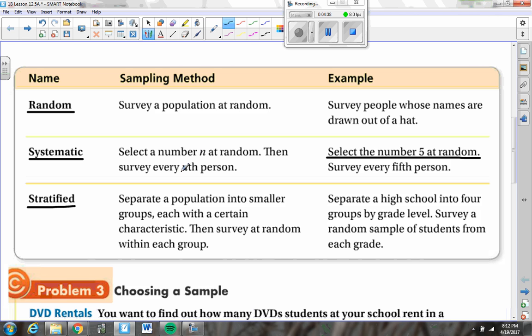The third type of sampling method is called stratified samples and a stratified sample separates the population of people into different categories, each of which have a certain characteristic. So like the example here, separate a high school into four groups by grade level. Maybe we want to randomly pick 20 people from the Birchwood High School, but we don't want all of them to be seniors, we don't want all of them to be freshmen or all of them to be whatever age because we think maybe there's some difference in the ages. So we pick randomly five seniors, we pick randomly five juniors, five sophomores, five freshmen, and that makes a stratified sample because we grouped the population along a certain characteristic.